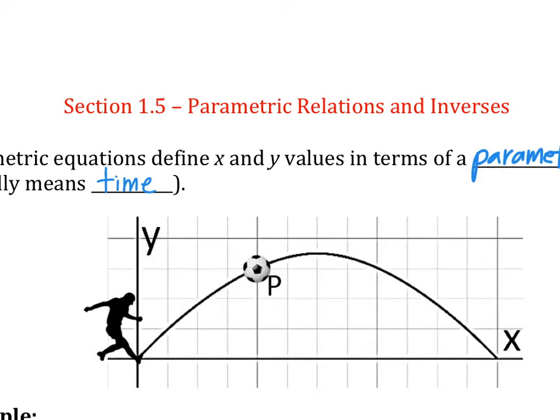For example, think about a person kicking a soccer ball. At t equals 0, that's before he starts kicking, so the ball is next to his foot. Once he kicks it, at t equals 1 second it's probably somewhere here, 2 seconds somewhere here, 3 seconds somewhere here. So x and y can be talked about in terms of something else, which is time - the horizontal movement with respect to time and the y movement with respect to time.